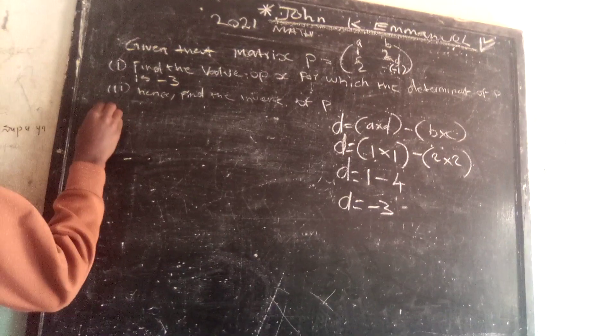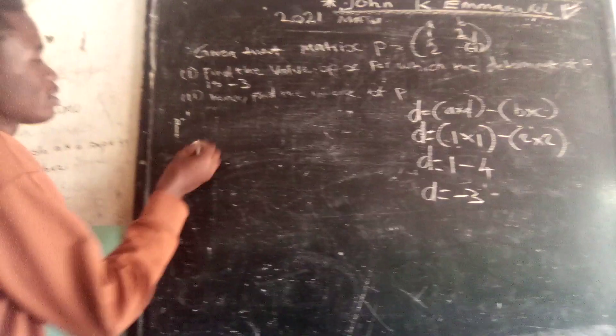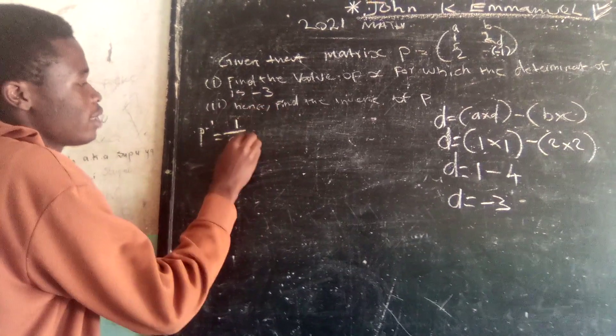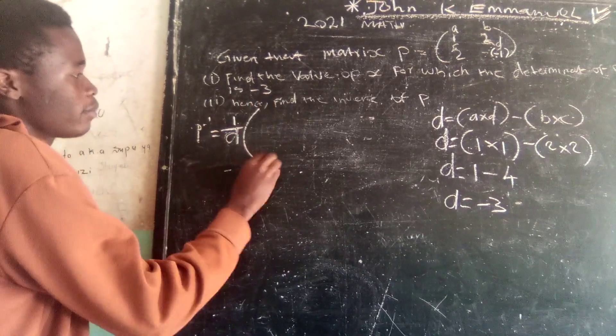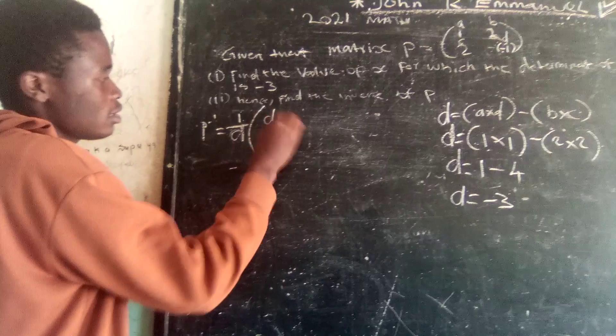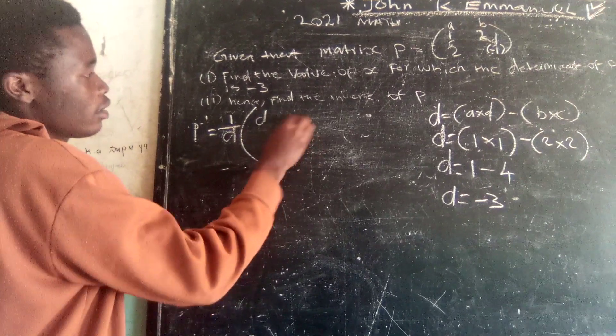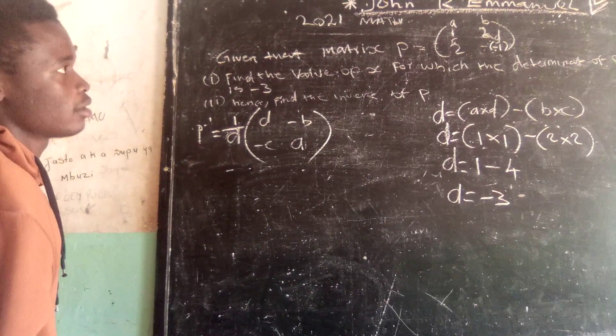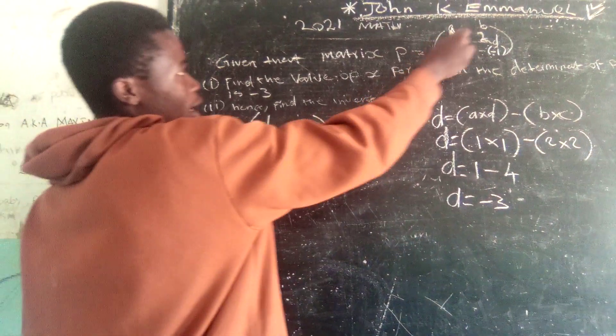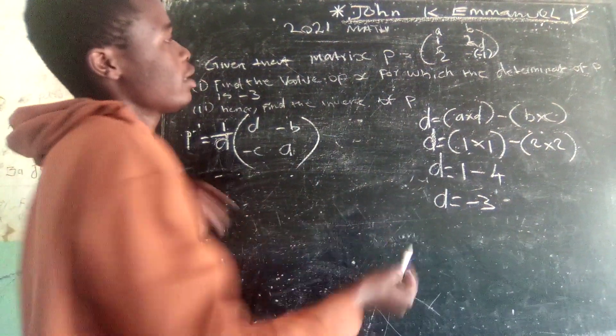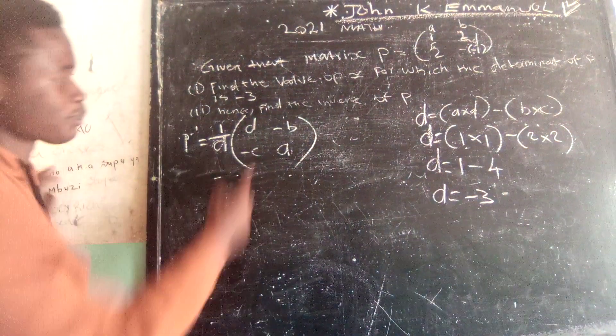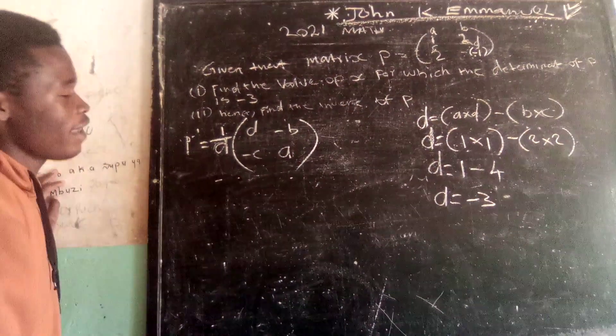P inverse is supposed to 1 over the determinant, open brackets, then D, A, negative B, and negative C. This is the formula. So A and D, they swap, then B and C, they possess some negative signs.